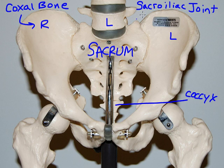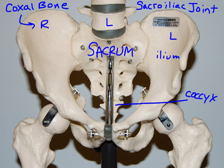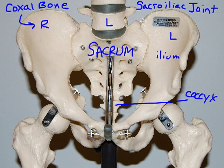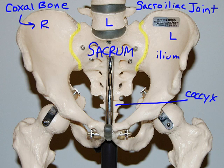Sacro refers to the sacrum; iliac is a reference to the ilium, which is the upper bone of the coxal bone, which we'll look at more closely in our next photograph. I'll highlight the sacroiliac joint in yellow. We have partial movement or articulation here at this joint.